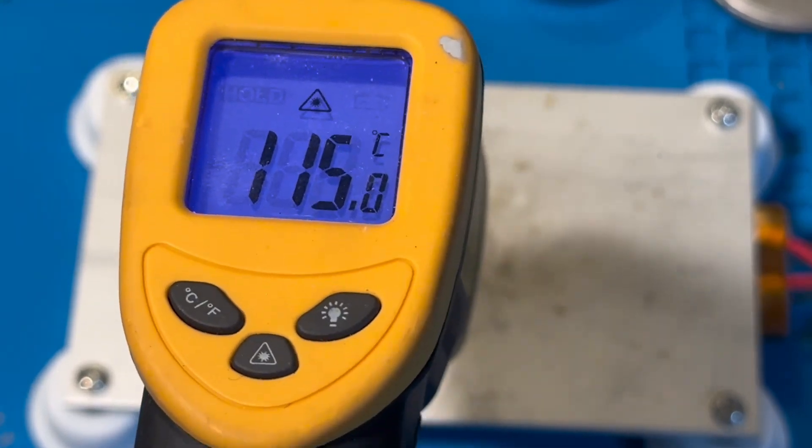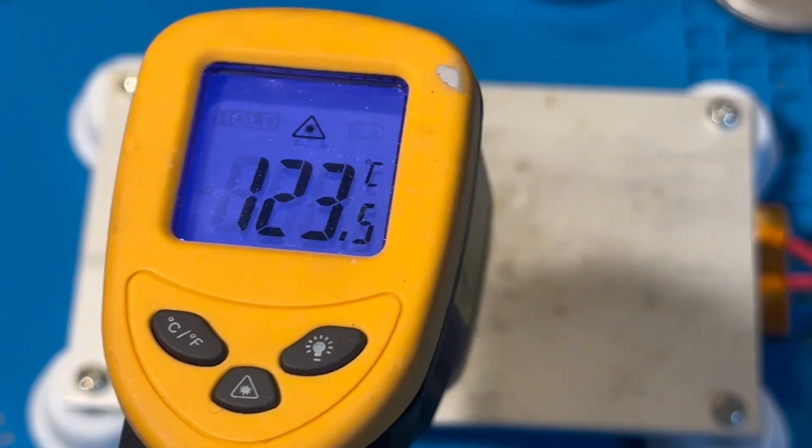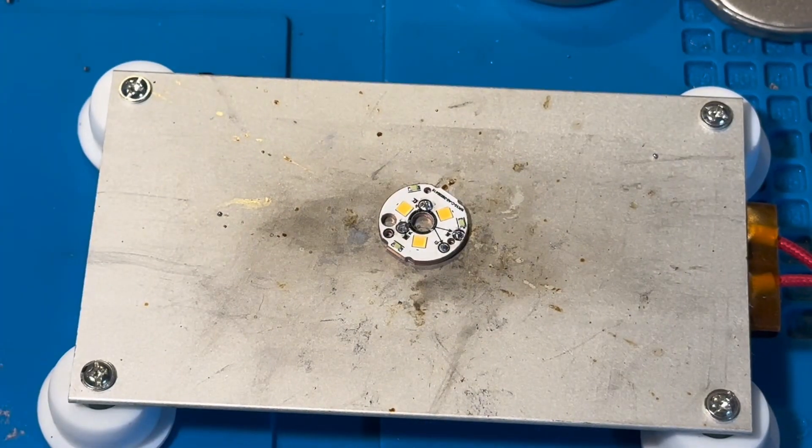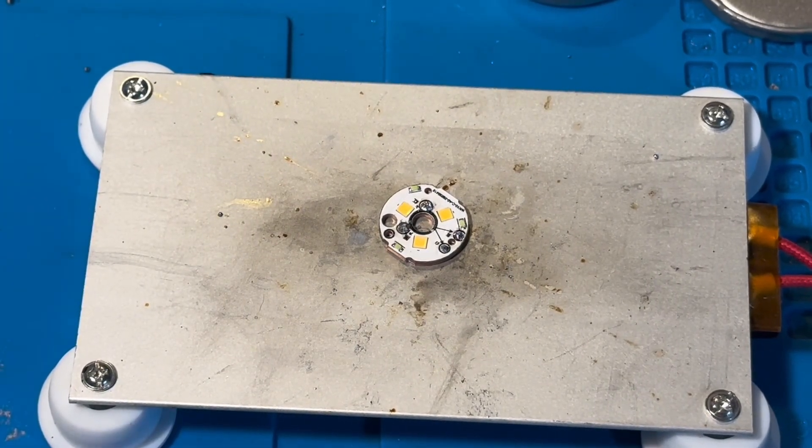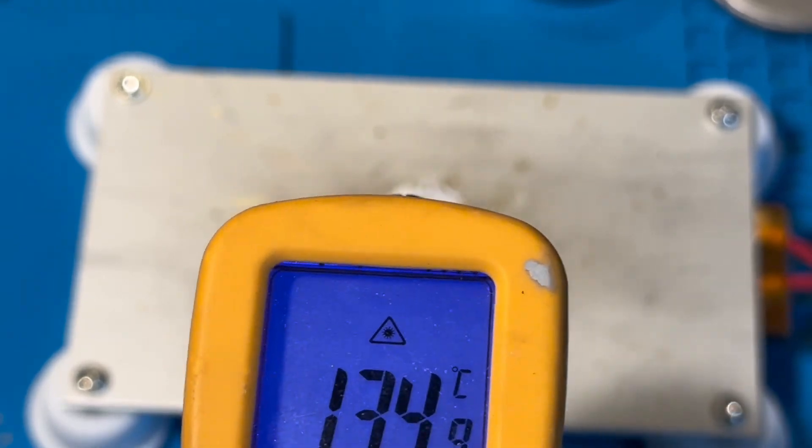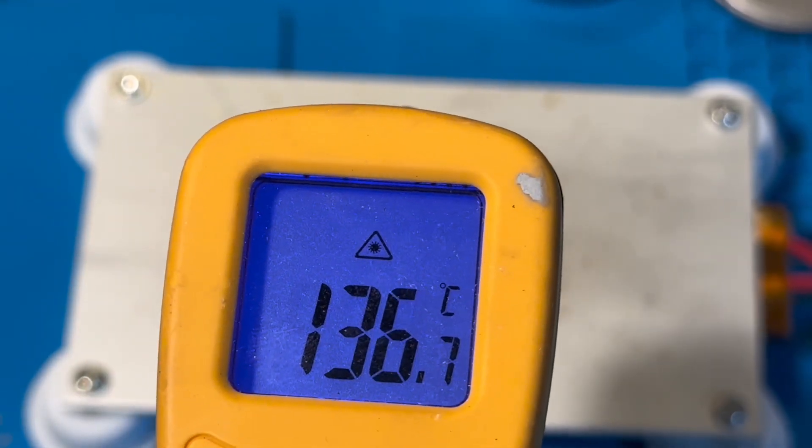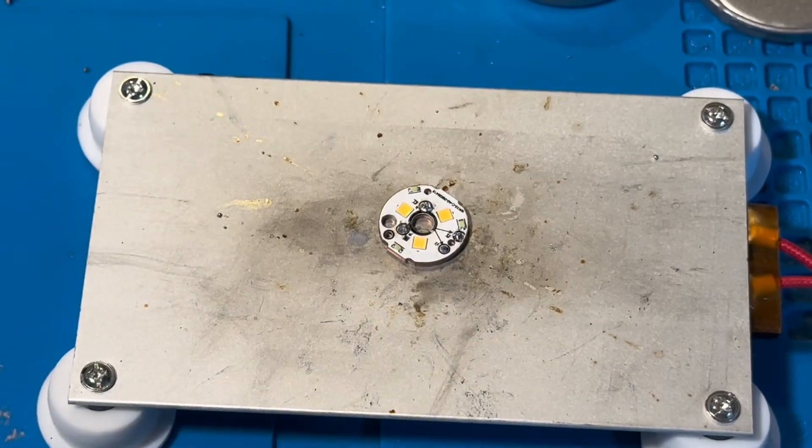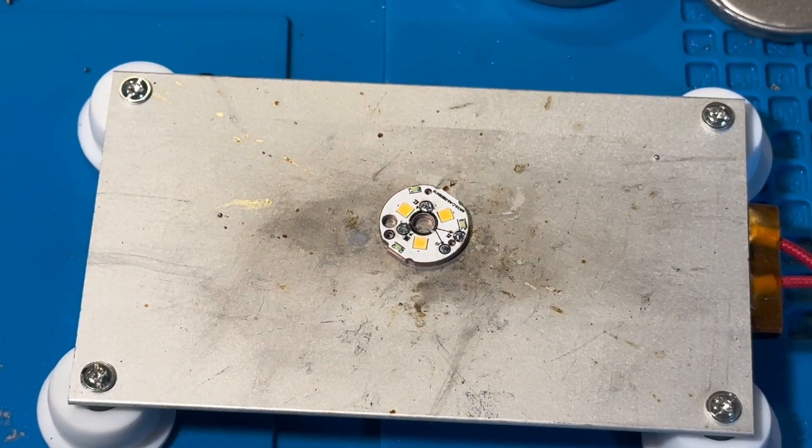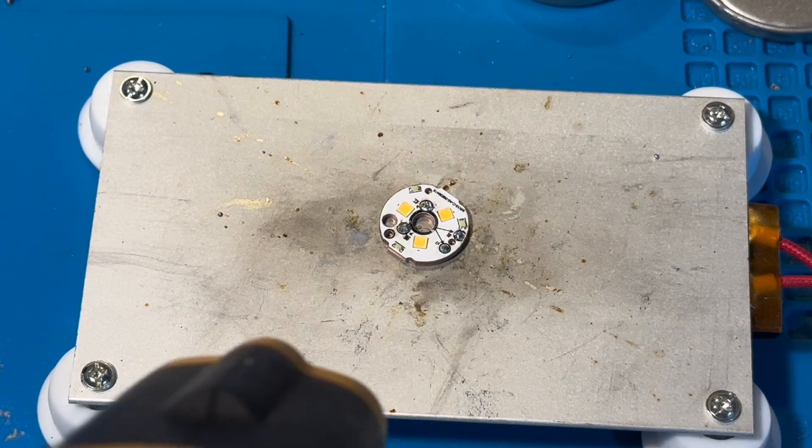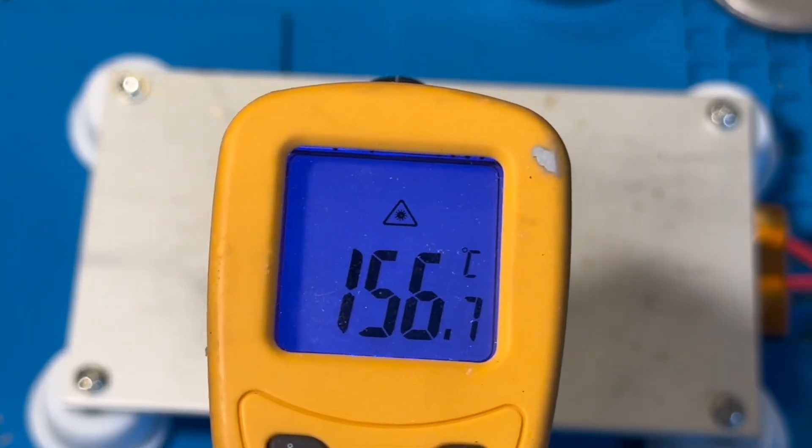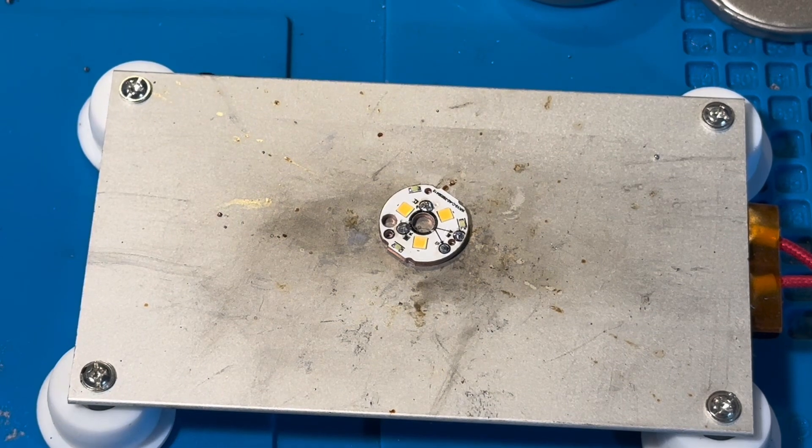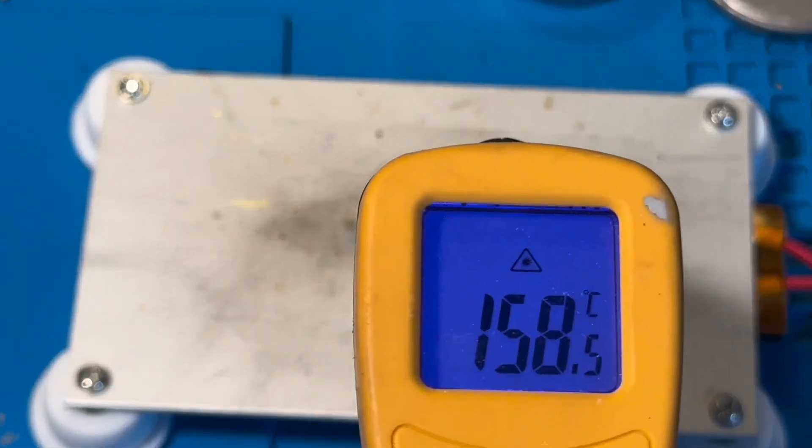Usually, when I'm doing an LED, I bring the temperature up to about 180 degrees Celsius. But with these, to get them off, I needed it even higher. I needed it at about 200. So, I'm just waiting for the temperature to rise.